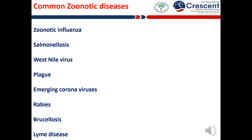West Nile virus is an infectious disease that first appeared in the United States in 1999. Infected mosquitoes spread the virus that causes it. People who get West Nile virus infection usually have no symptoms or only mild symptoms. The symptoms include fever, headache, body ache and skin rash.